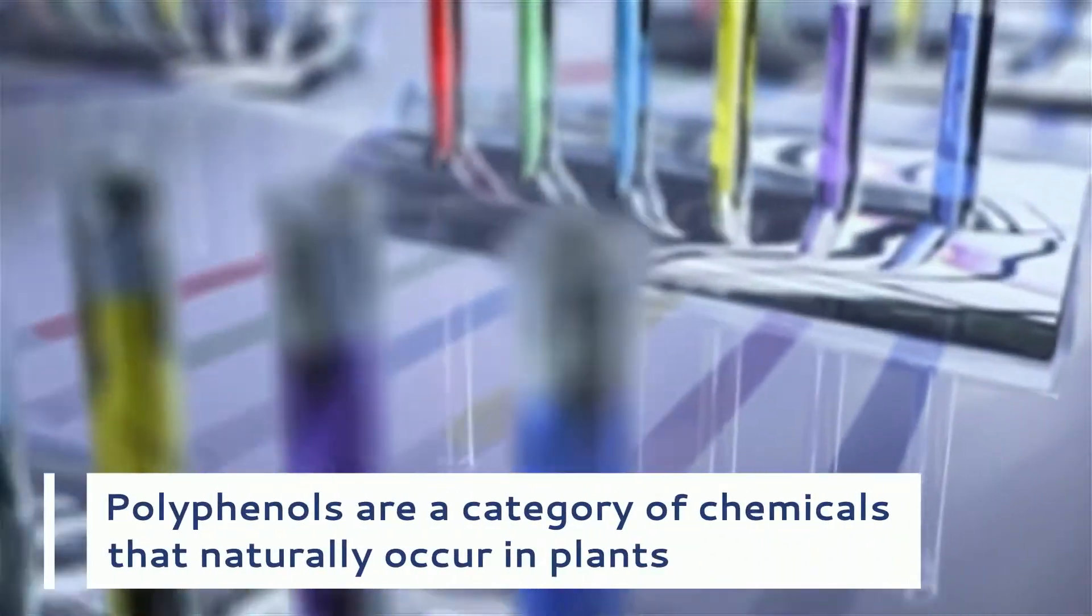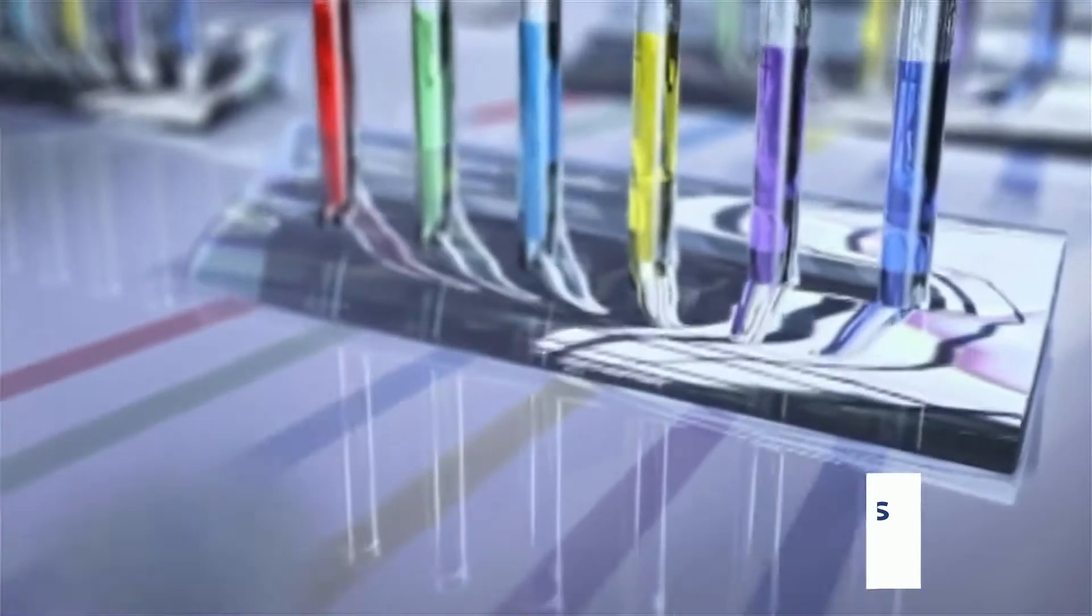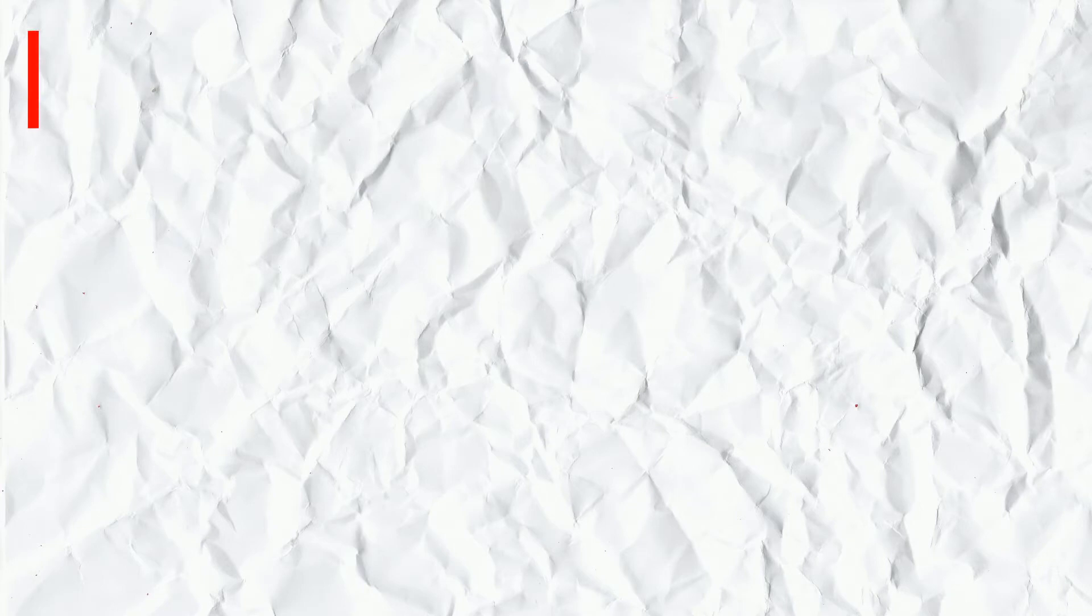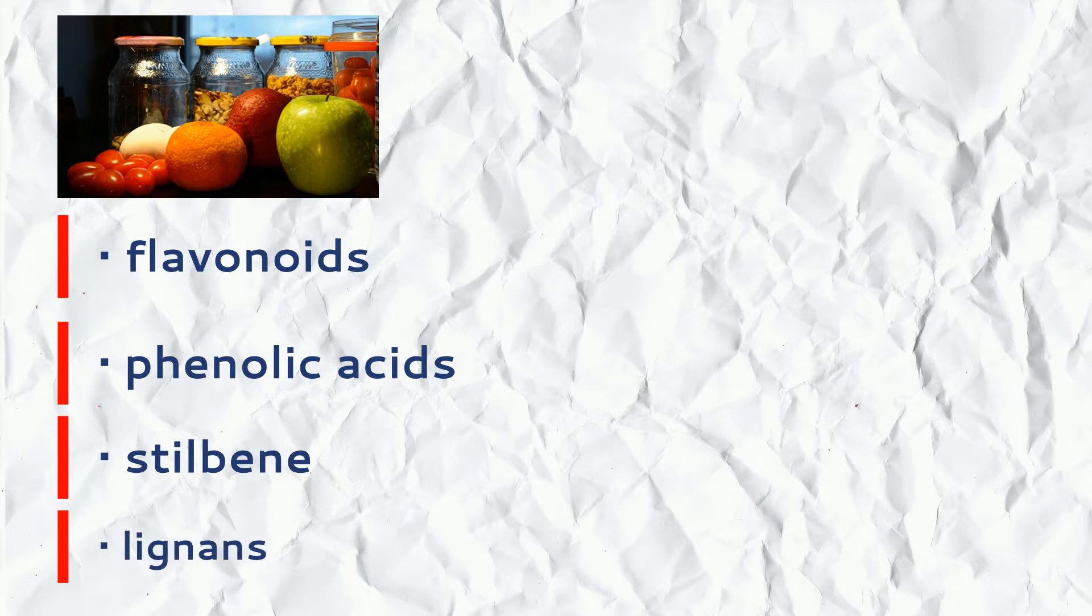Polyphenols are a category of chemicals that naturally occur in plants. There are more than 500 unique polyphenols. Collectively, these chemicals are known as phytochemicals. Polyphenols can be further categorized into the following groups: flavonoids, phenolic acids, stilbenes, and lignans.